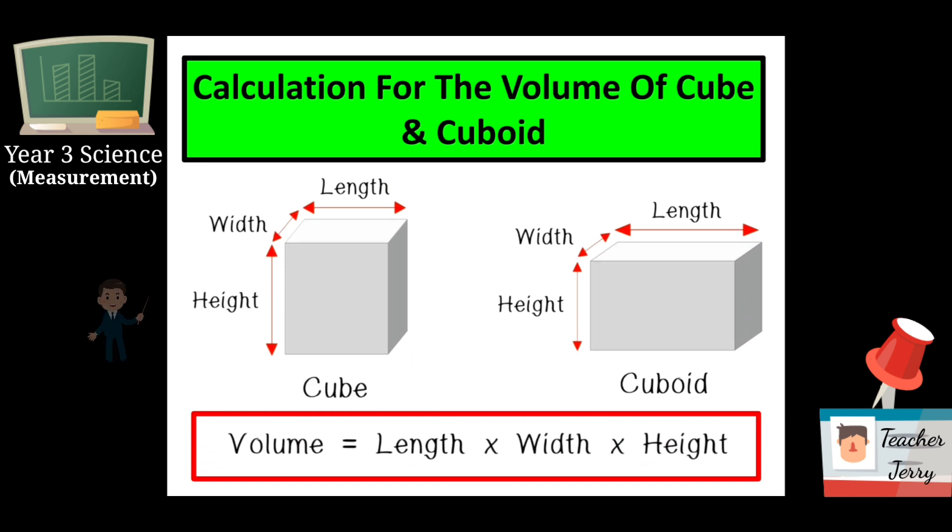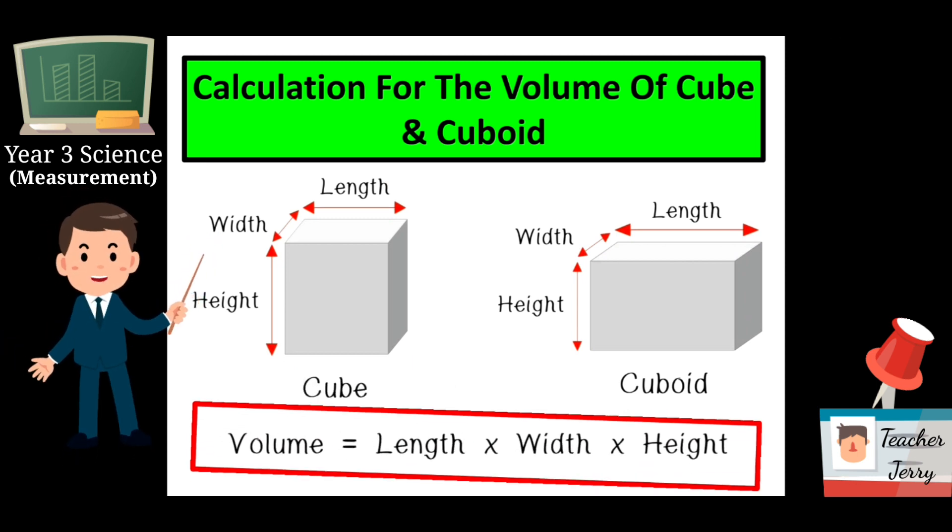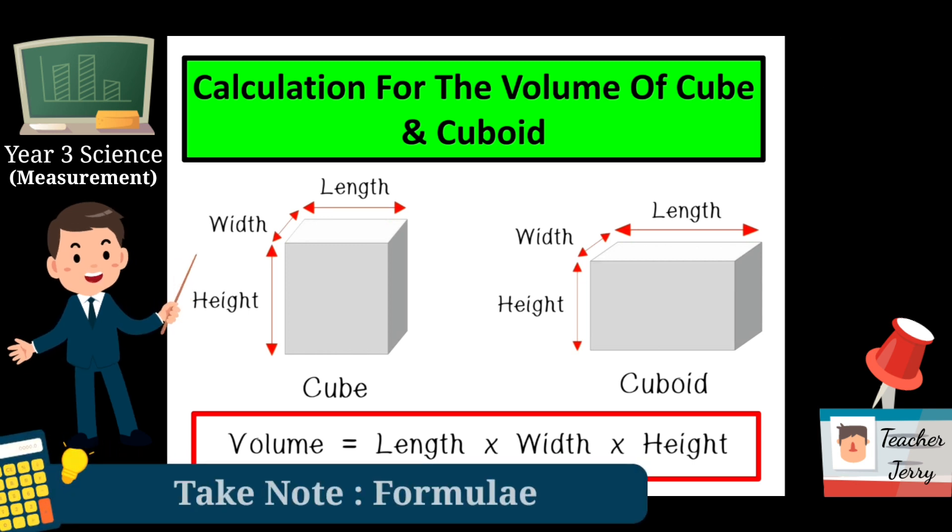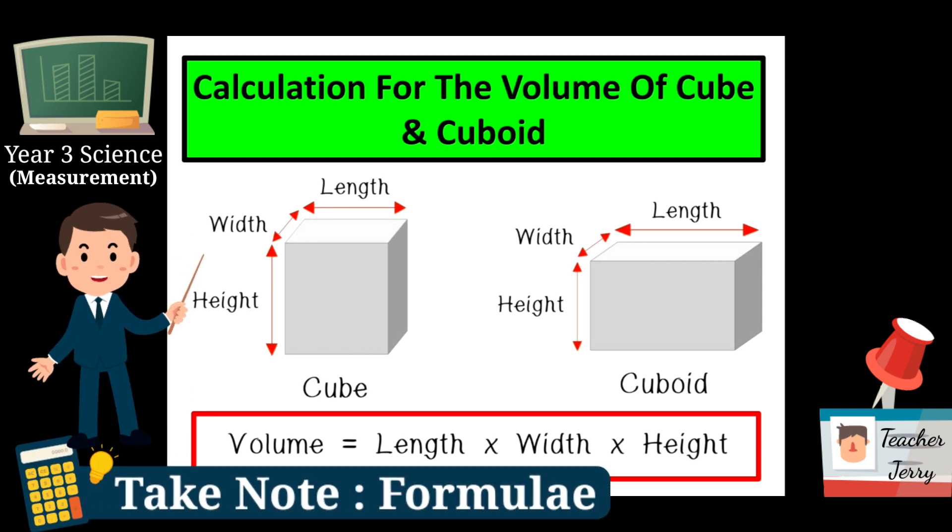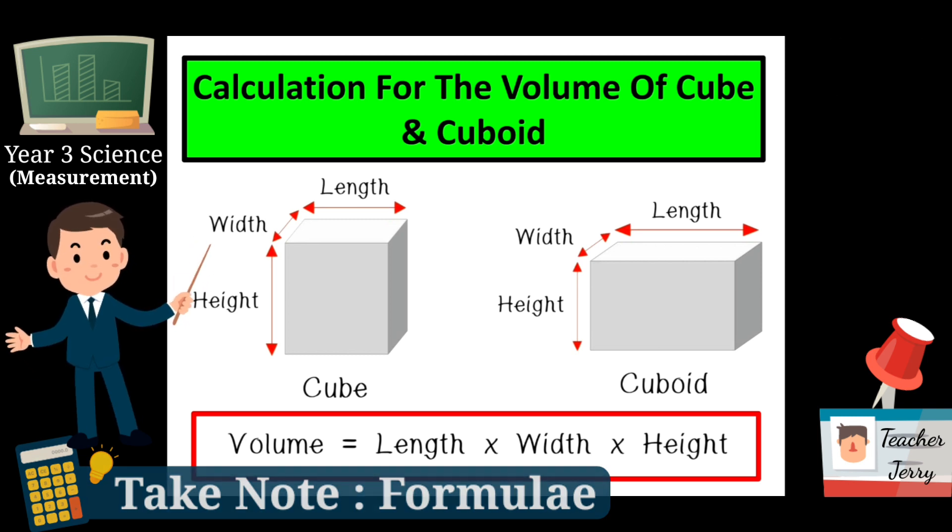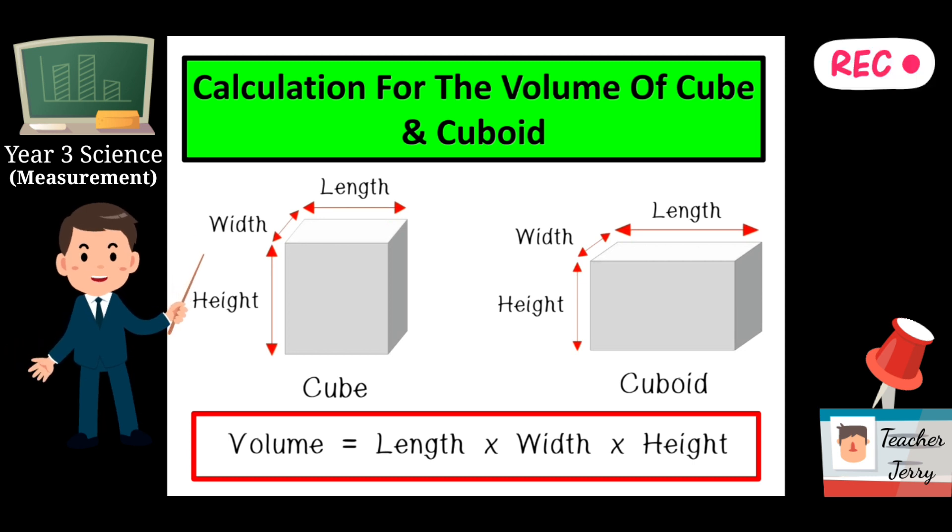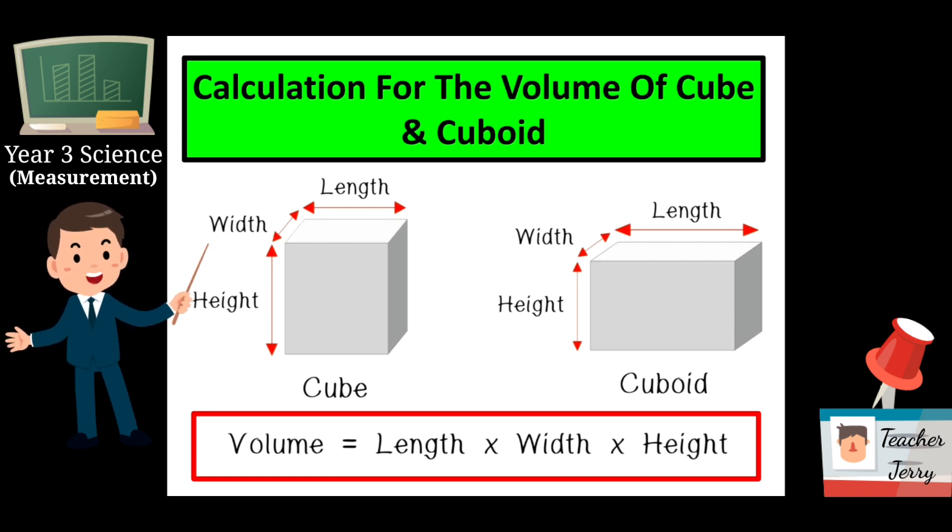The volume is equal to length multiplied by width and then multiplied by height. In Malay: isi padu mempunyai formula, formulanya adalah panjang darab lebar darab tinggi. Volume equals to length times width times height. You can draw it in your notebook after this - pause the video and copy it in your notes for your future reference.